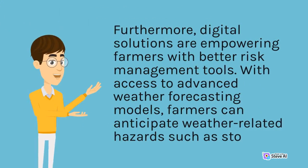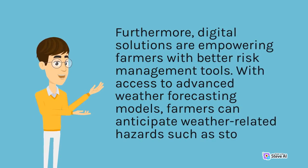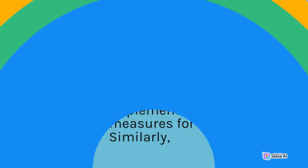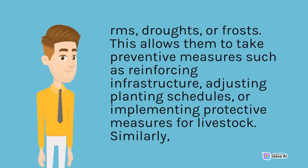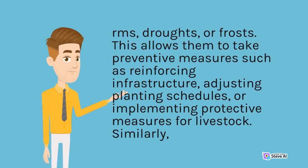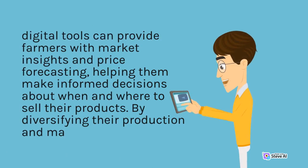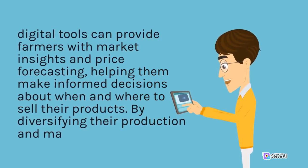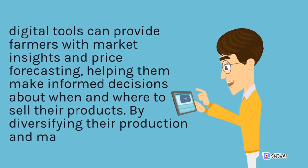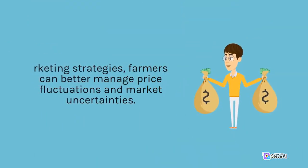Furthermore, digital solutions are empowering farmers with better risk management tools. With access to advanced weather forecasting models, farmers can anticipate weather-related hazards such as storms, droughts, or frosts. This allows them to take preventive measures such as reinforcing infrastructure, adjusting planting schedules, or implementing protective measures for livestock. Similarly, digital tools can provide farmers with market insights and price forecasting, helping them make informed decisions about when and where to sell their products. By diversifying their production and marketing strategies, farmers can better manage price fluctuations and market uncertainties.